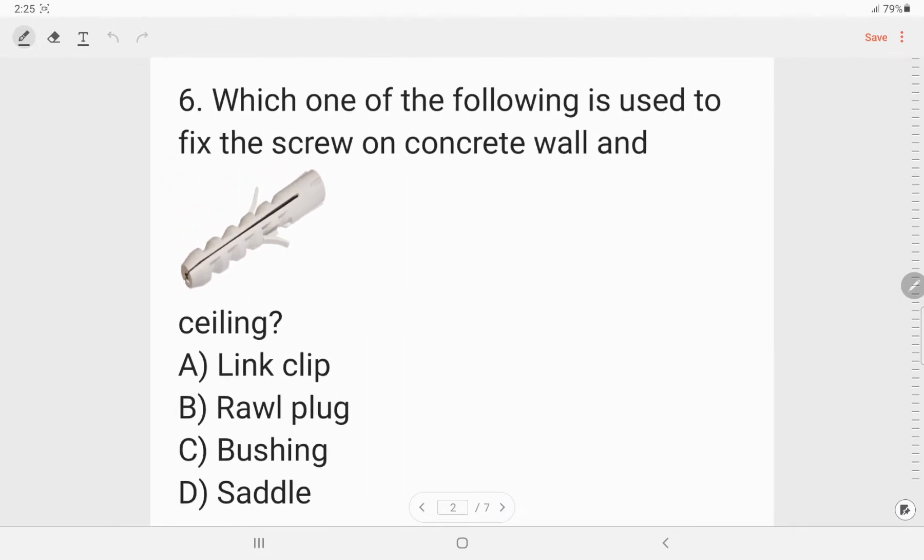I will continue discussing a few more in this video. Question number six is which one of the following is used to fix the screw on concrete wall and ceiling? This is known as rawl plug or also known as wall plug. Option B is the correct answer. We can generally see in our households we use this to fix the screw on concrete walls.